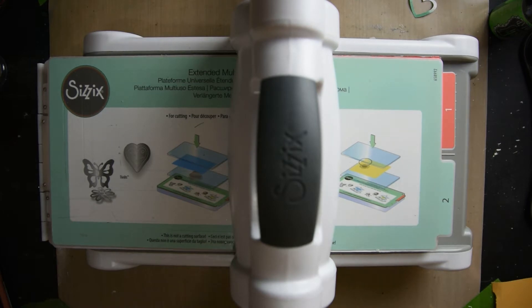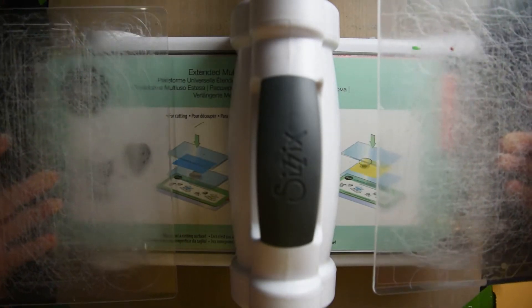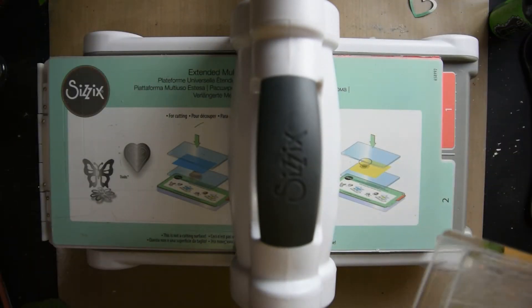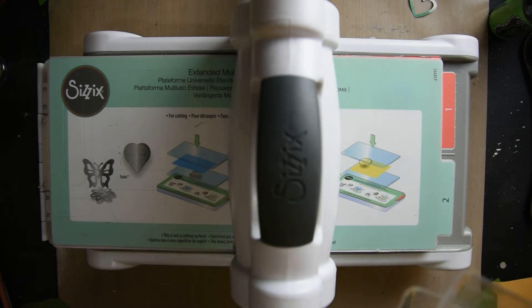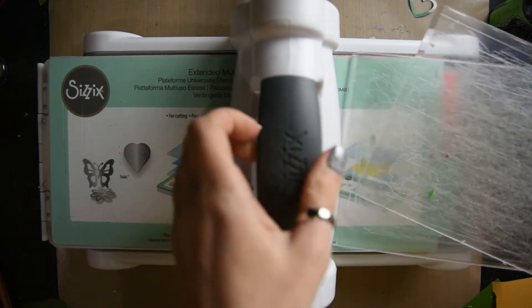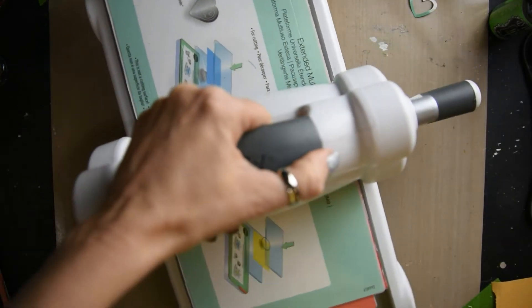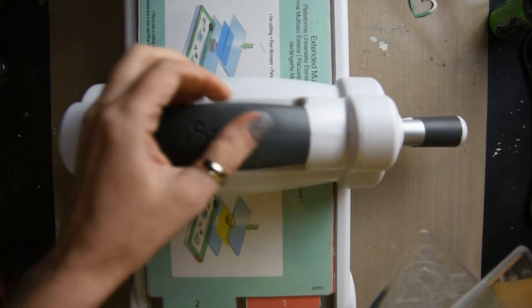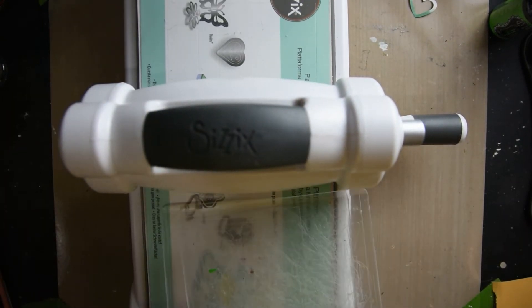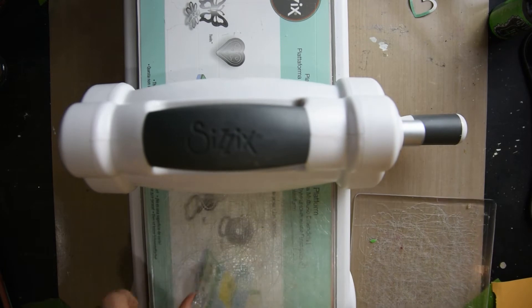So this is the Sizzix. It comes with two plastic plates, and this is what you use to put your die cuts in between when you're cranking it or spinning it through. Let me show you.